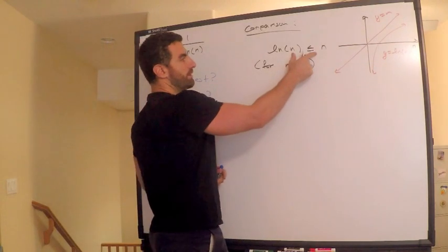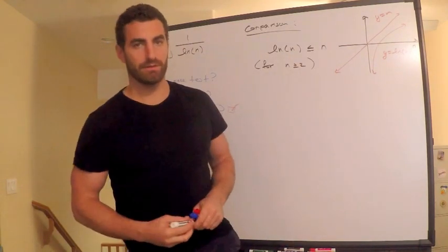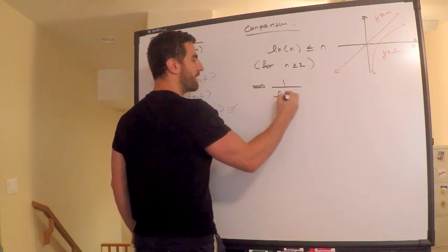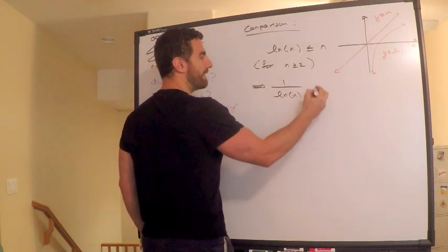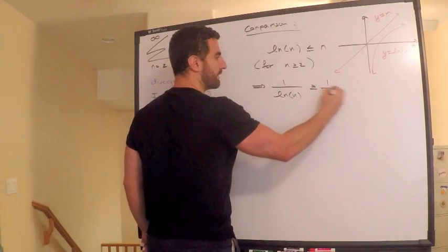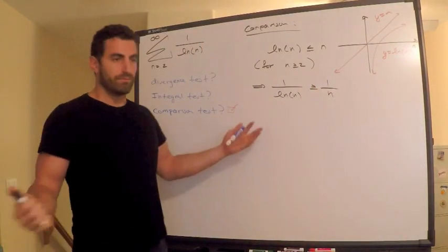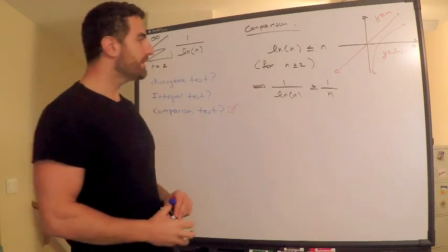From this, what I am going to do is take the reciprocal of both sides. Now remember, when I take the reciprocal of both sides, in other words, 1 over ln of n, I need to switch the inequality, 1 over n. Now how nice, this works out perfectly.